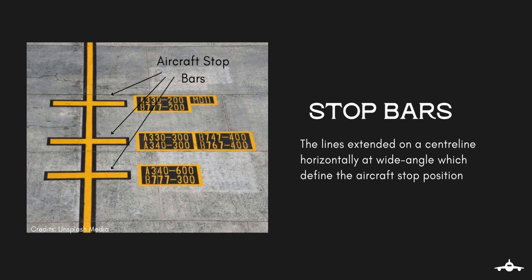Just as the center line confines the aircraft in one axis, the aircraft stop bar confines the aircraft in another axis. They are different for different aircrafts.